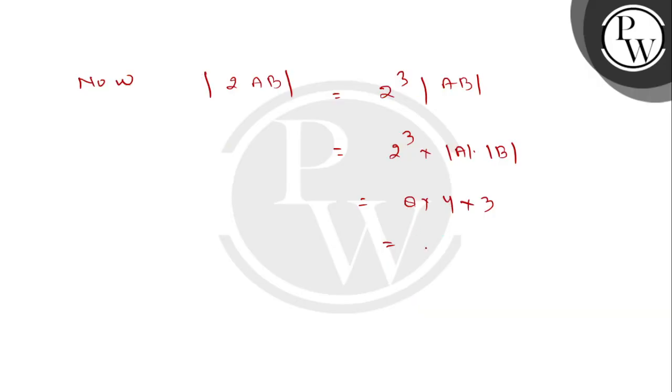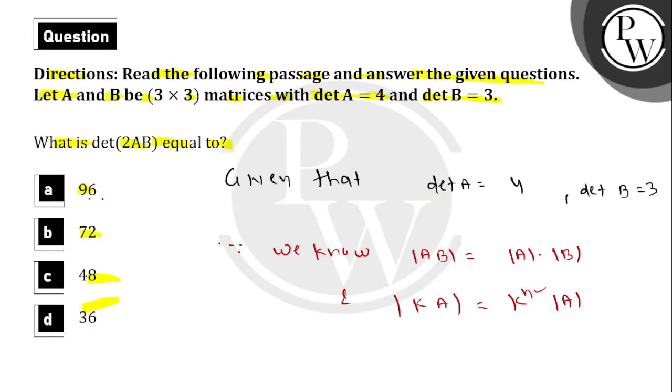8 times 4 times 3 equals 8 times 12 equals 96. The final answer is 96, option A. Hope you enjoyed it, best of luck, thank you.